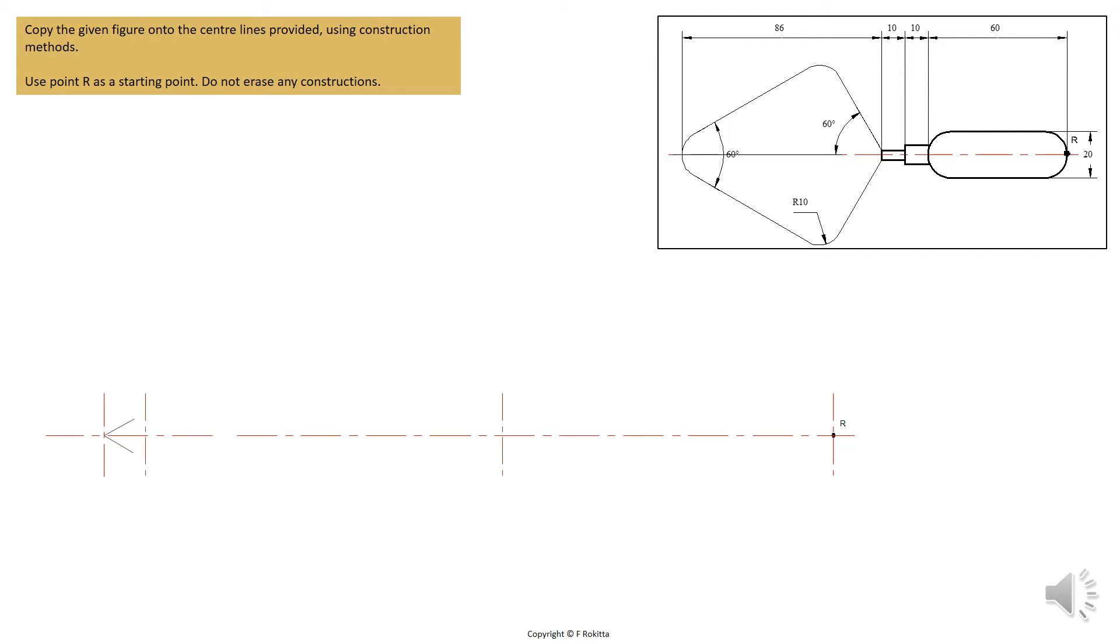Let's read the question. Copy the given figure onto the center lines provided using construction methods. Use point R as a starting point and do not erase any constructions.